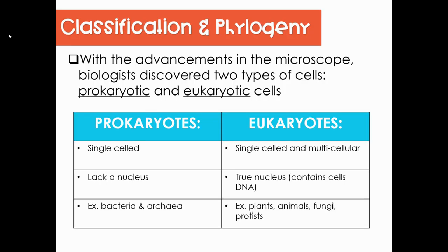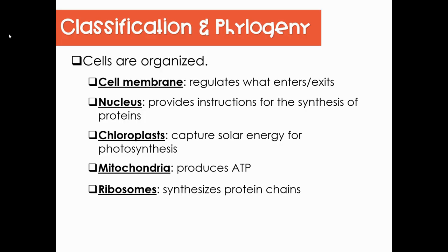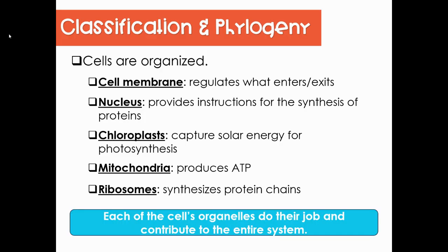Let's start with classifying organisms by cell type. Prokaryotes are single-celled organisms that lack a nucleus — this includes bacteria and archaea. Eukaryotic cells can include single-celled organisms but also multicellular organisms, and they have a true nucleus. Remember: eukaryotes — 'u' rhymes with 'do,' they do have a nucleus. Prokaryotes — 'pro' rhymes with 'no,' no nucleus. Eukaryotes include plants, animals, fungi, and protists. Our cells are very organized and include organelles, each with a specific job that contributes to the cell system as a whole.